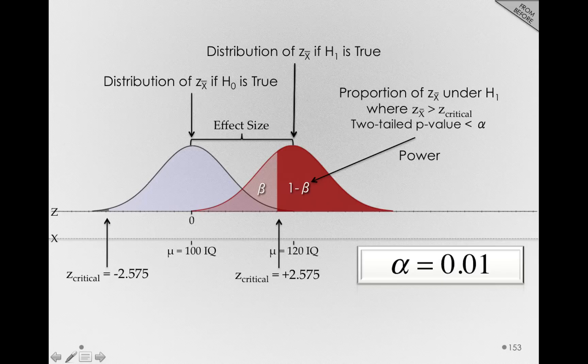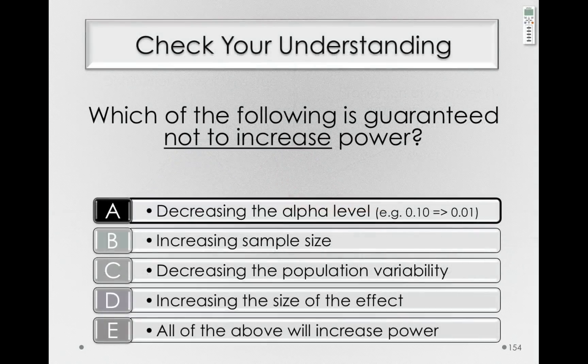This is true whether we have a directional test, whether we've specified in the wrong direction, or whether or not the null hypothesis is true. Notice that in the phrasing 'guaranteed not to increase power,' decreasing the alpha level is the only one.